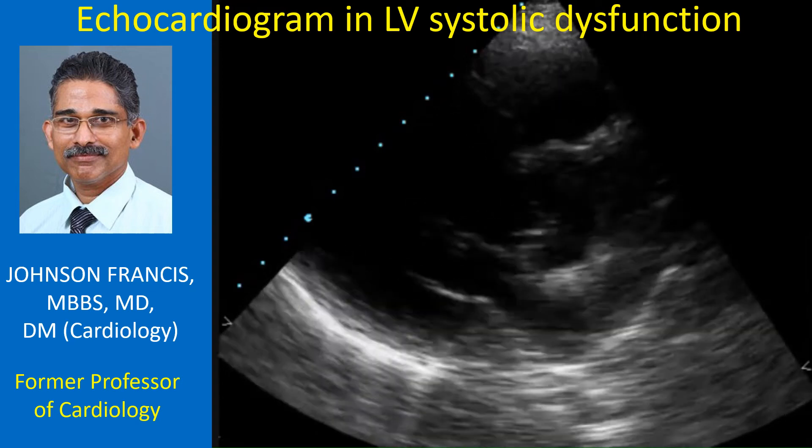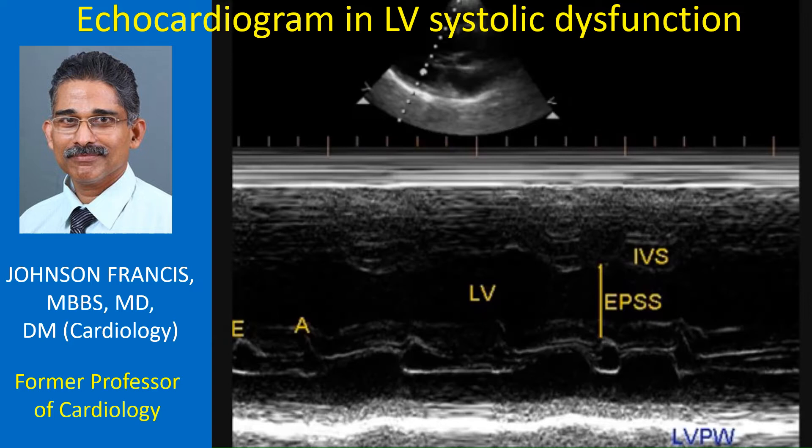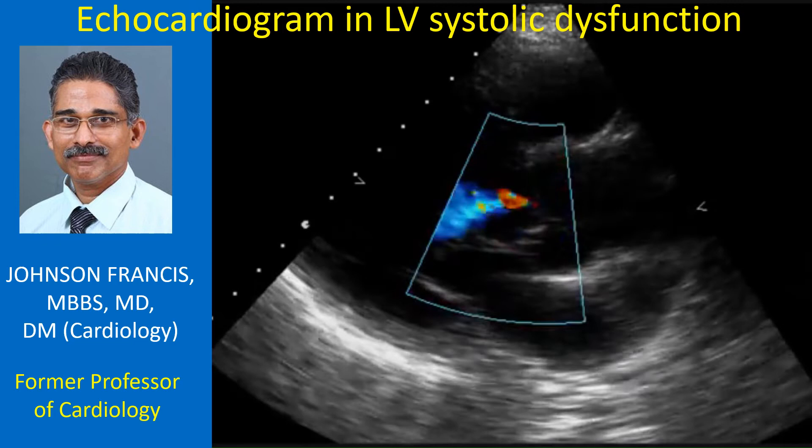Here is a video clip from a case of coronary artery disease with additional aortic regurgitation. 2D, M mode, color Doppler and spectral Doppler are displayed. Measurement of E-point septal separation, known in short as EPSS, is shown. EPSS is increased in LV dysfunction. Measurement of pressure halftime in AR is also shown.